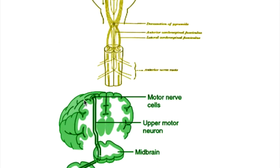What remains normal? The sensory system remains normal. Muscle coordination remains normal. Cognitive processes remain normal. The muscles that control eye movement remain normal, and the parasympathetic neurons in the spinal cord also remain normal.